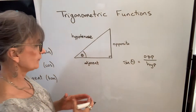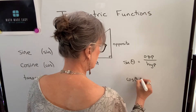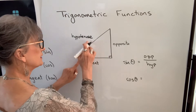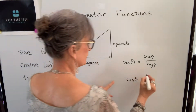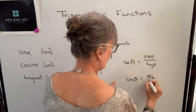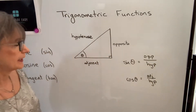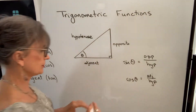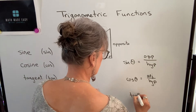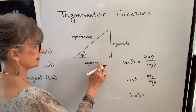Then we have the cosine function, so the cosine of our angle is always defined as the ratio of the side adjacent to the angle to the hypotenuse — adjacent over hypotenuse. And the third trig function is tangent, which is defined as the ratio of the opposite side to the adjacent side.